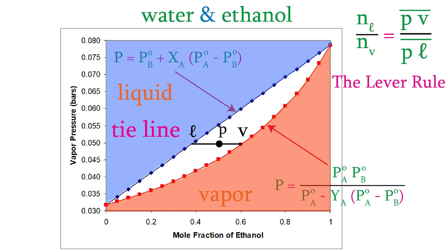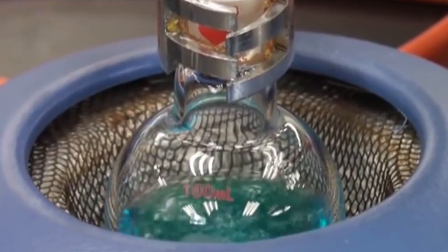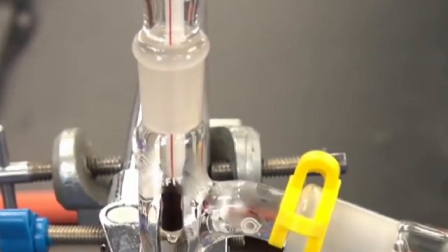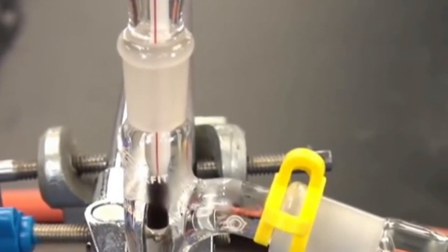The previous example is interesting but has limited practical value, because the y-axis was total vapor pressure, which is not easy to measure. In a practical distillation, we don't change pressure at constant temperature — instead, the pressure is held constant and it's the temperature that changes. Let's try a plot where that's the case.